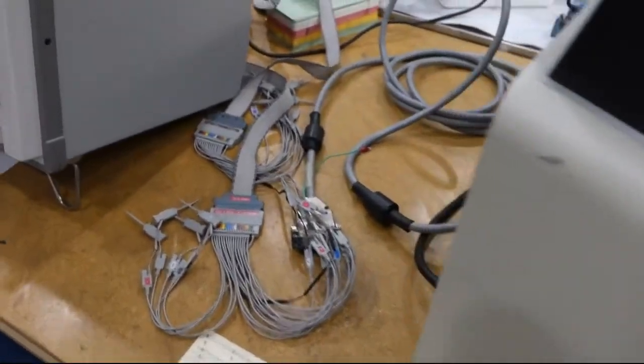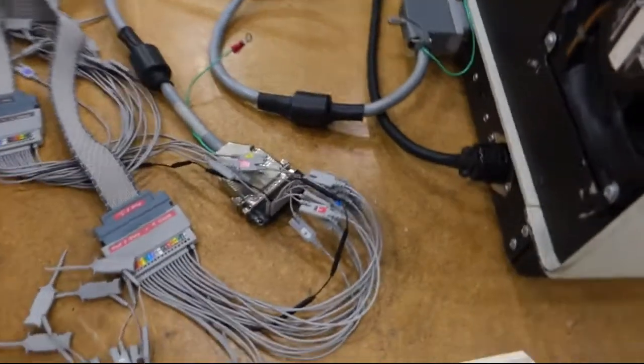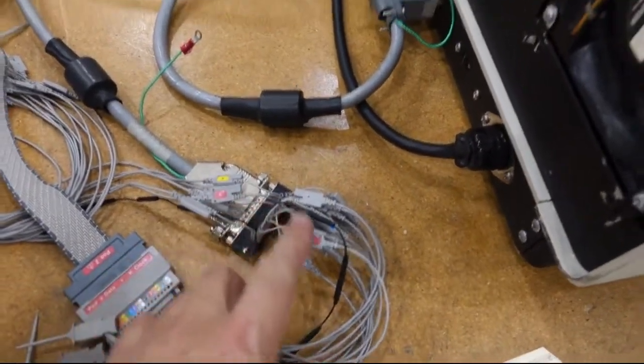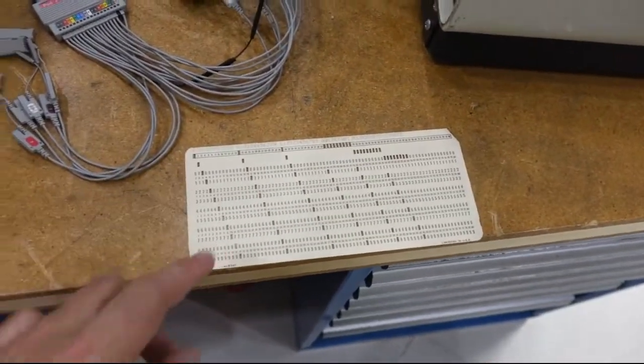This should be the final test of the documentation card reader. I'm now hooked up to the output, and I have my test card with all the columns.